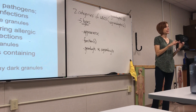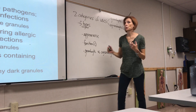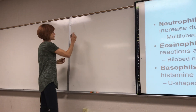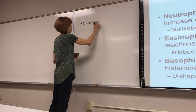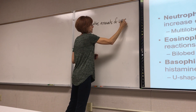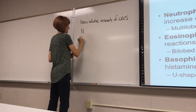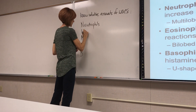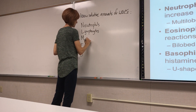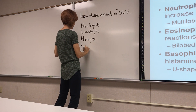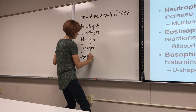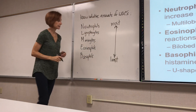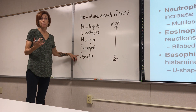You don't have to know exact numbers or exact percentages, but you should know the relative amount — which has the highest concentration in the blood down to the lowest. The mnemonic for that is 'Never Let Monkeys Eat Bananas': neutrophils, lymphocytes, monocytes, eosinophils, and basophils. This is most to least.